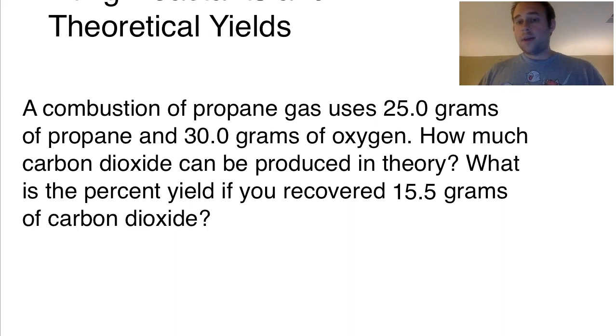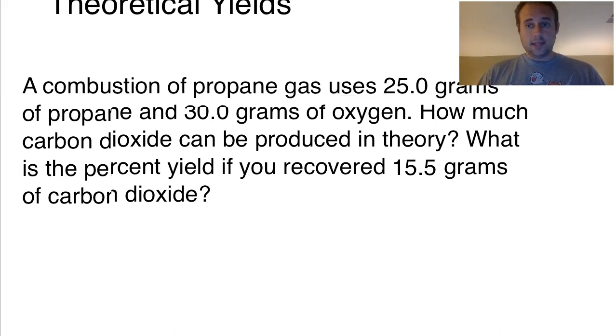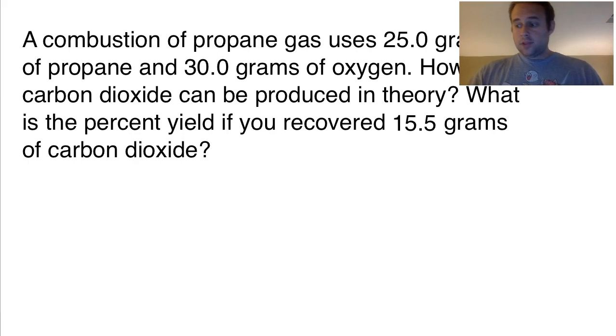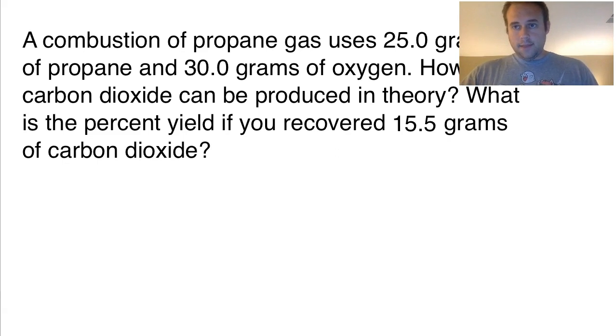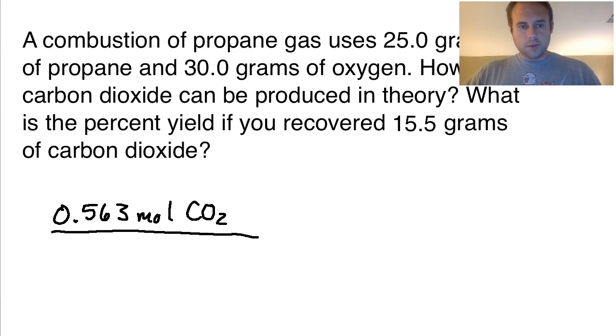So we're talking about theoretical yield. We determined the limiting reactant is going to be the oxygen in this case because it could produce less. So then we say, all right, the oxygen could produce a total amount, right, of the value 0.563 moles of CO2. So we said that's how much CO2 we could produce and then the oxygen would run out.